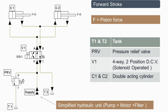From port P it will go to port A, then the flow is divided into two parts. Since the load or force on the piston is zero, equal flow will go on both sides and it will be admitted on the left-hand side of the piston in both cylinders C1 and C2, causing the piston to move in the forward direction.